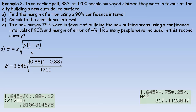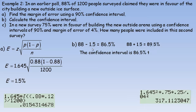You can go back and look at the first page if you want to find that z-score yourself. p is 0.88 because we're told that, so (1 minus 0.88) goes here, and there were 1,200 people so n is 1,200. That works out to 1.5%, so that's the margin of error. For part B we take our 88% and subtract 1.5 and add 1.5, and so the confidence interval extends from 86.5% to 89.5%.